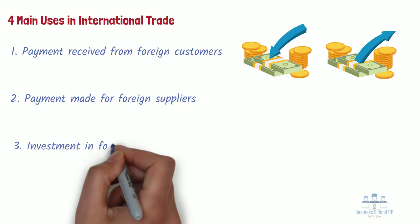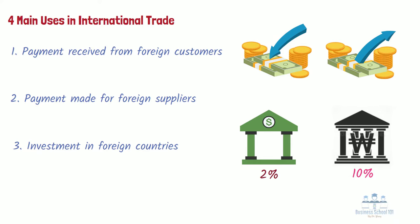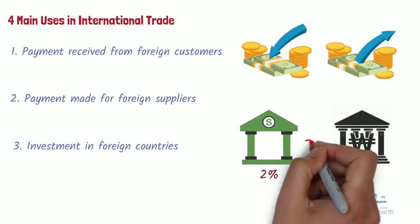Third, investment in foreign countries. International businesses also use foreign exchange markets when they have spare cash that they wish to invest for short terms in money markets. For example, consider a US company that has $10 million and wants to invest for 3 months. The best interest rate it can earn in the United States may be 2%. However, investing in a South Korean money market account may earn 10%. The company may change its $10 million into Korean won and invest it in South Korea to earn the extra 8% interest.